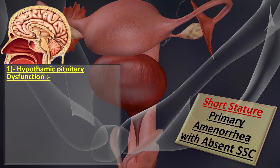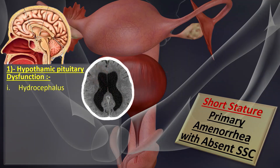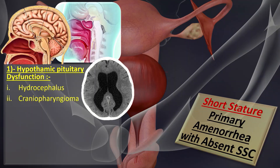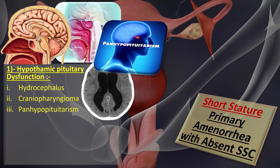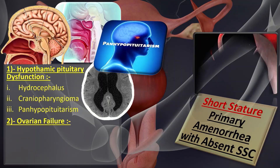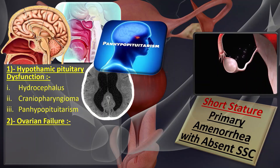In hypothalamic pituitary dysfunction, which is in fact hypogonadotrophic hypogonadism, we include conditions like hydrocephalus, craniopharyngioma, and panhypopituitarism. When it comes to ovarian failure, it is basically hypergonadotrophic hypogonadism, and it includes conditions like Turner syndrome, mosaic Turner, and mixed gonadal dysgenesis.